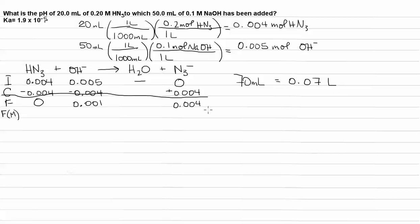So, the final molarity is going to be moles per liter. 0.001 divided by 0.07. 0.004 also divided by 0.07. The final number of moles of the HN3 is 0. We have none of that. The final concentration of hydroxide is 0.0143. And the final concentration of N3 minus is 0.057.